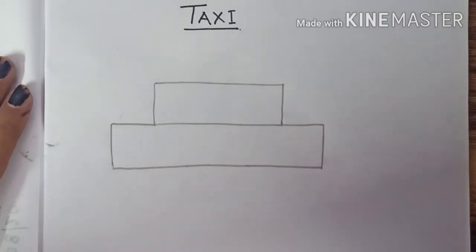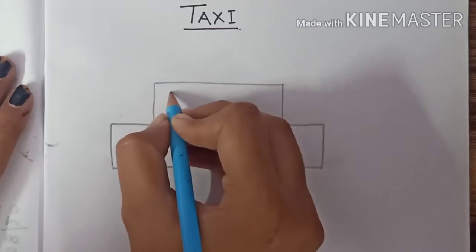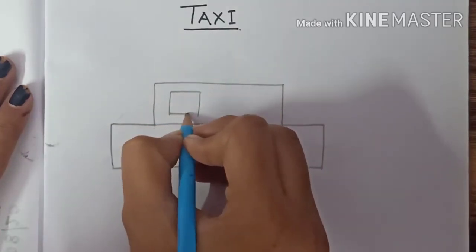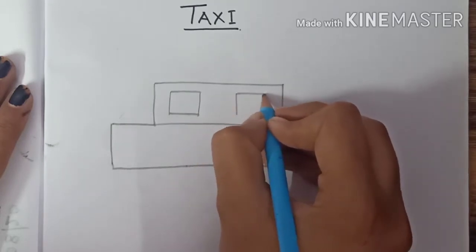Okay, after that we will draw squares, two squares. One and two.